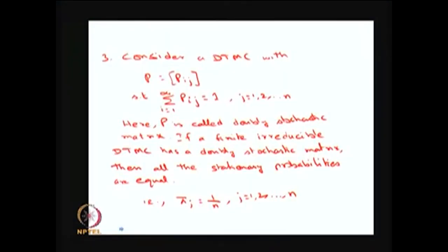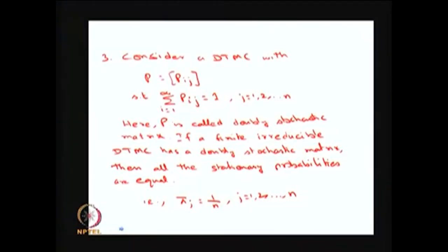We can use previous results; the only missing condition is aperiodicity, but since it is a doubly stochastic matrix, aperiodicity is taken care of. Therefore, the stationary probabilities exist. When you solve π = πP with the constraint that the sum of π_i equals 1, since the matrix is doubly stochastic (column sums equal 1), the solution simplifies to π_i = 1/n for all states.